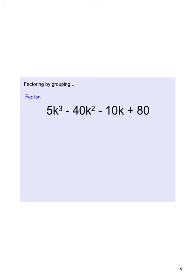Here's another third-degree example. It's important to note that 5, 40, 10, and 80 all share a factor of 5, so let's pull that out right away to make things easier. Dividing gives us 5 times the quantity k cubed minus 8k squared minus 2k plus 16.